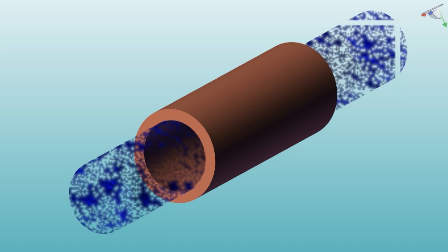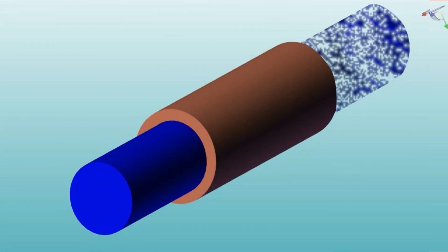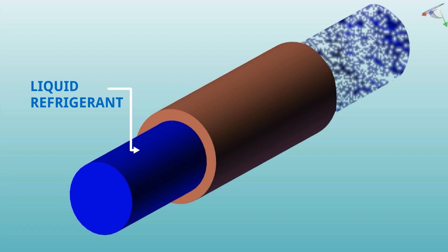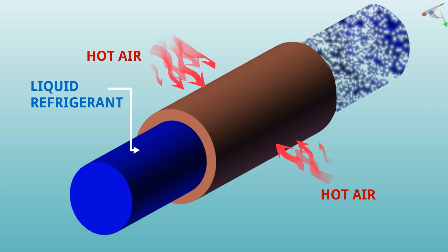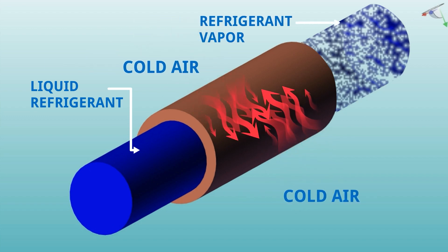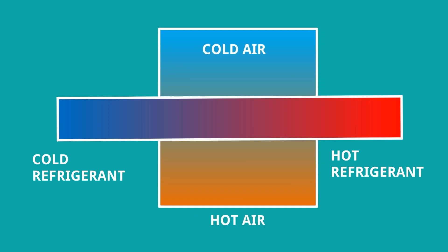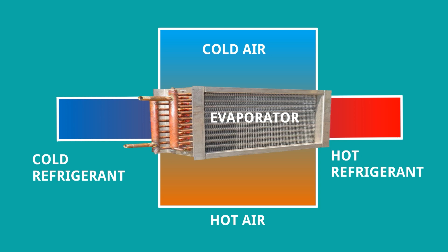Let's understand how heat transfer happens through the refrigerant pipe. This is a liquid refrigerant inside the pipe, and outside the pipe is hot air. The refrigerant takes heat from the hot air and is transferred into vapor. By losing heat, the air becomes cold. So here, cold refrigerant changes into hot refrigerant, and hot air changes into cold air — and this heat exchange between refrigerant and air happens in the evaporator.